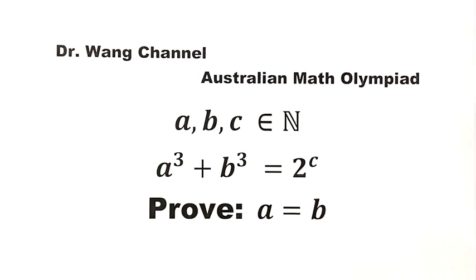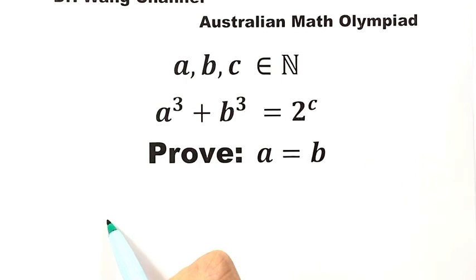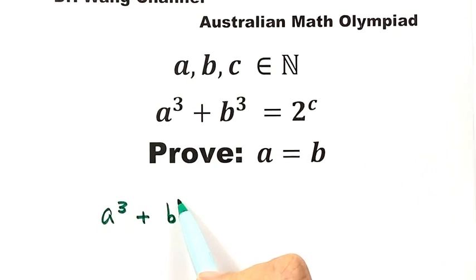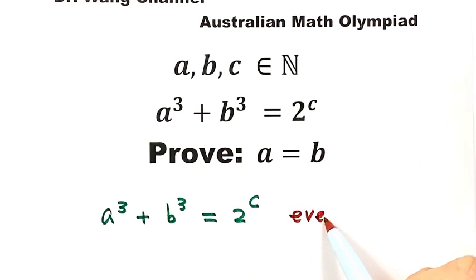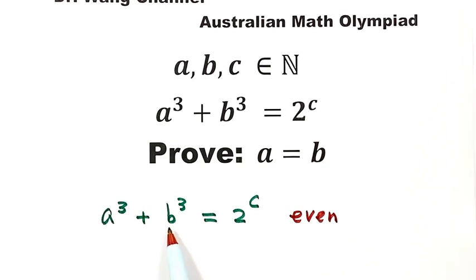We start from the given condition: A cubed plus B cubed equals 2 to the power of C. Because C is a natural number, 2 to the power of C is an even number, so the left hand side is even also. This implies A and B have the same parity — they are both odd numbers or they are both even numbers.